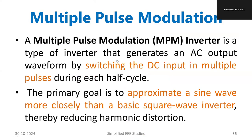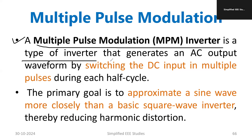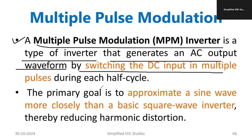First of all, let's see what multiple pulse width modulation means. The short form is MPM, which is a special type of inverter that generates AC output waveforms by switching the DC input in multiple pulses during each half cycle, instead of using a single pulse.